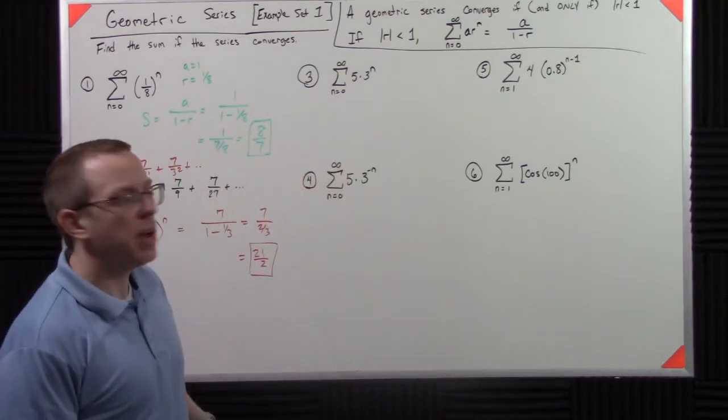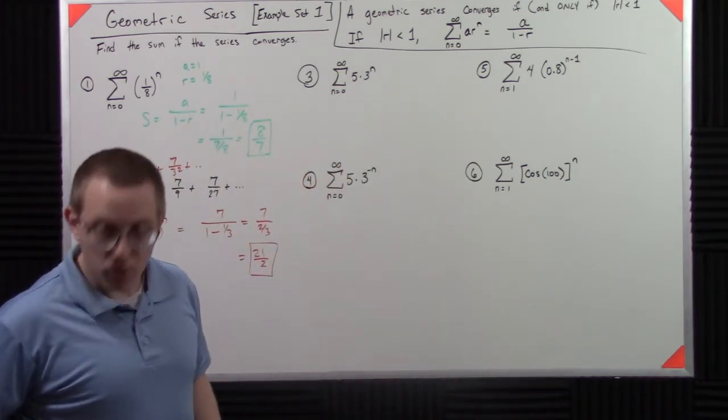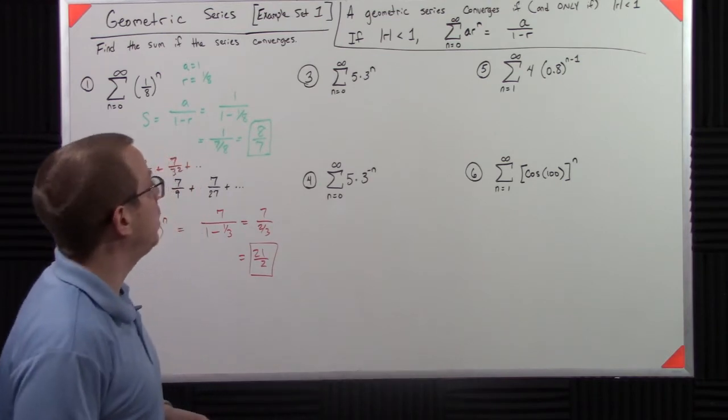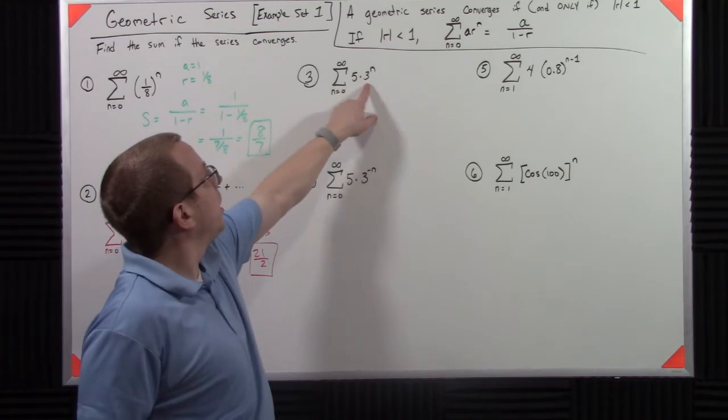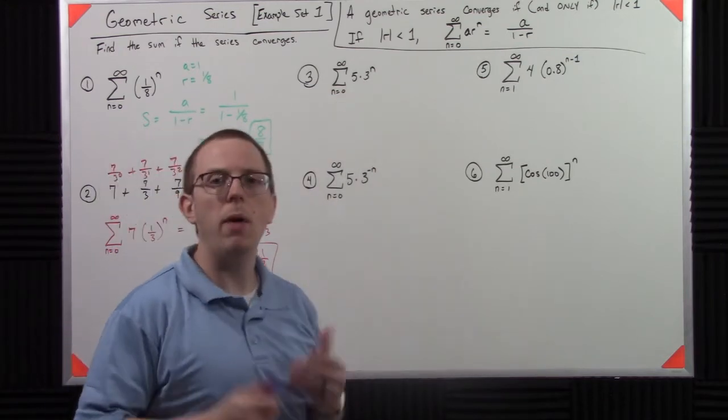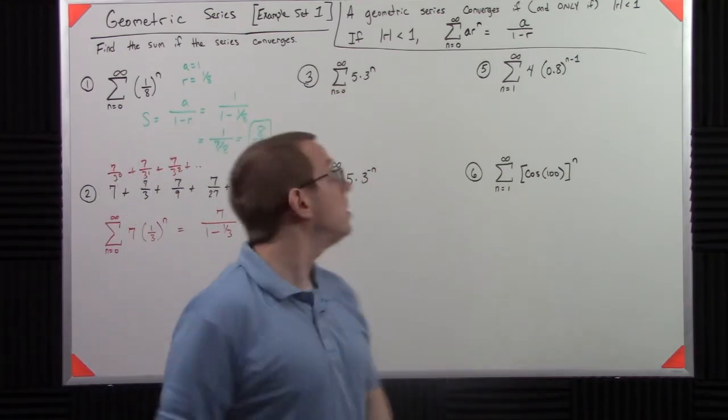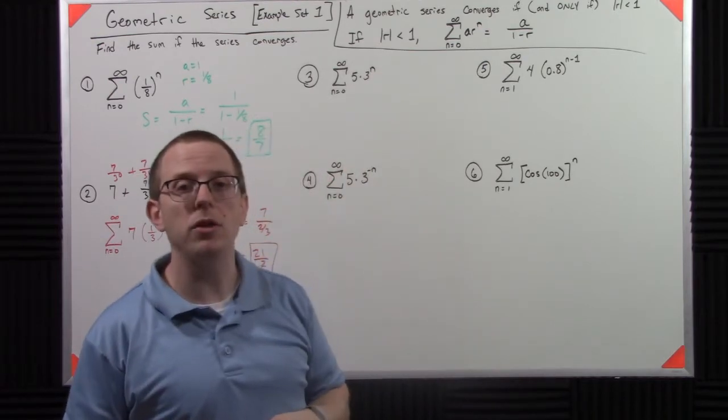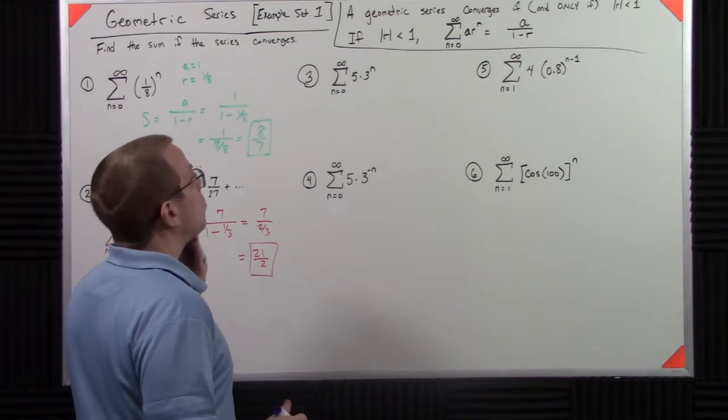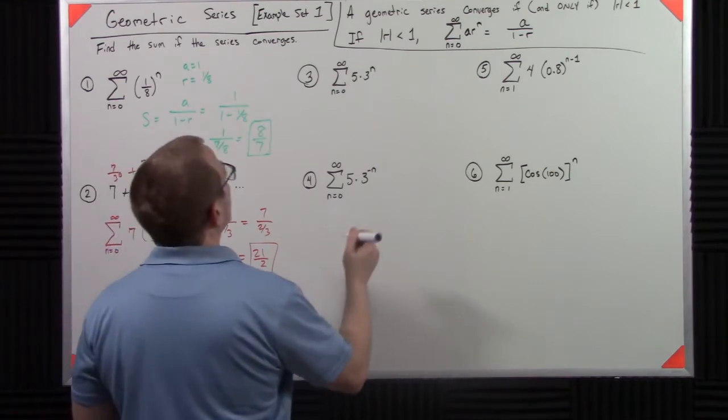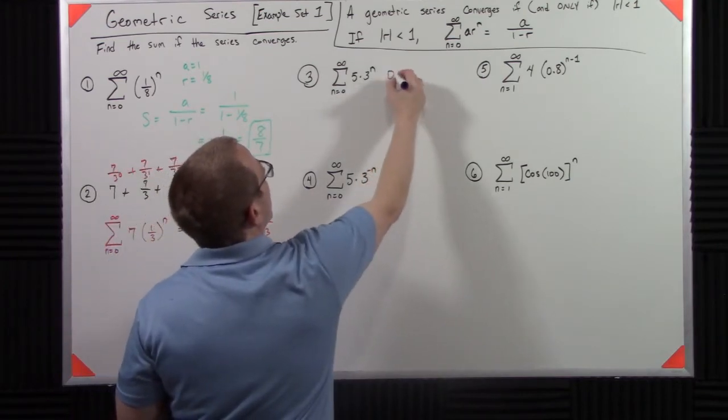Our next one, 5 times 3 to the n. So this is already in the format that we needed. So I have a, and then I have r is equal to 3. However, in this particular case, r is not less than 1. The magnitude is not less than 1. So this diverges.